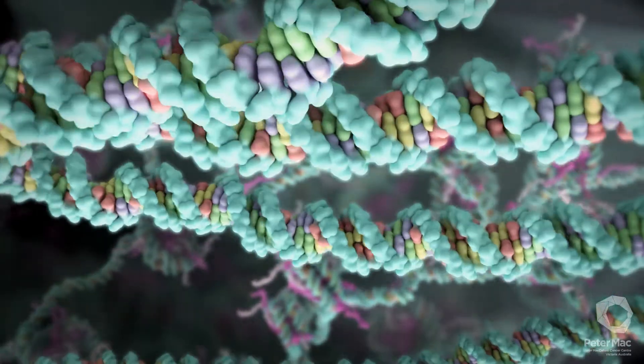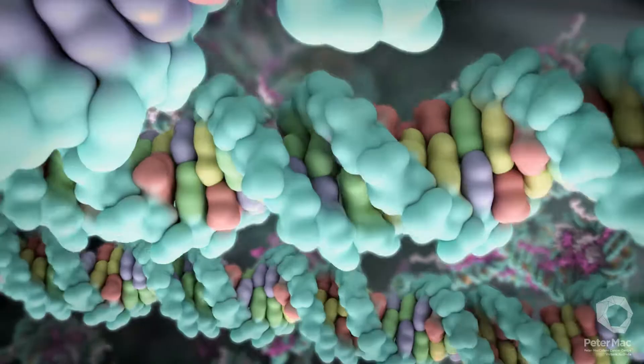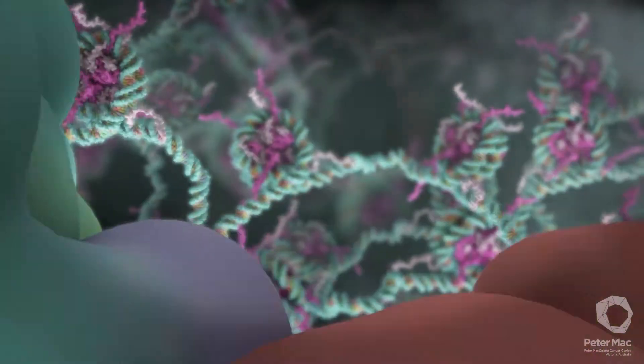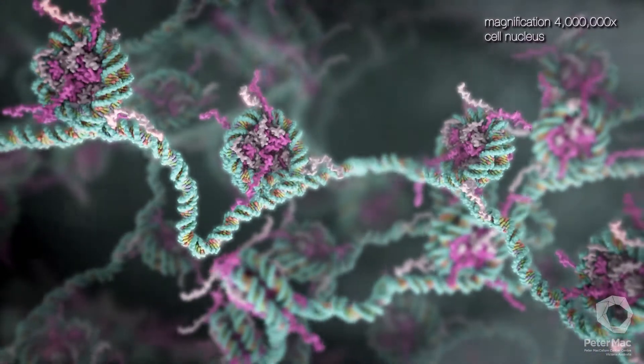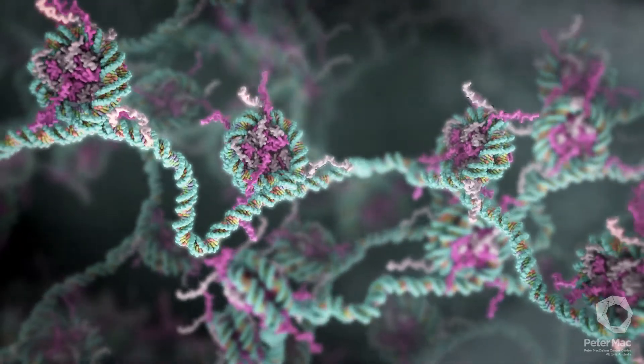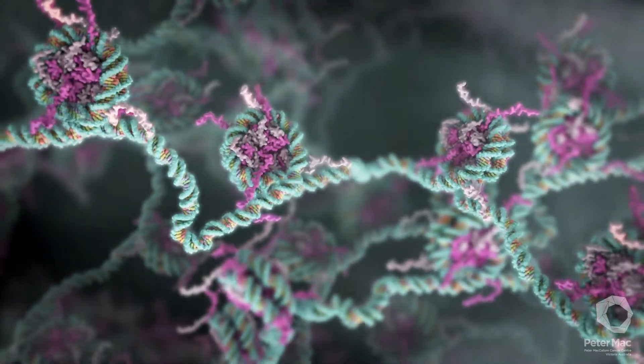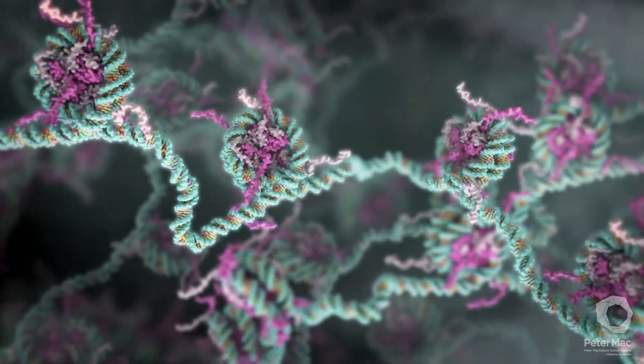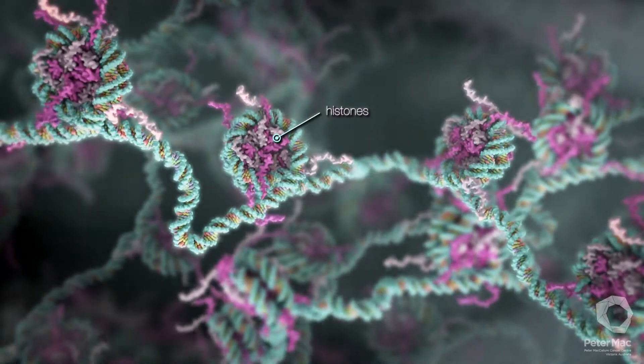DNA encodes the information needed to make proteins, which are the building blocks of our body. To keep two meters of DNA organized within the nucleus, it is wound around special structures called histones, much like thread on a spool.